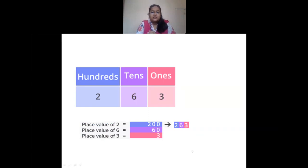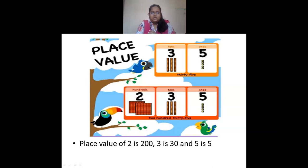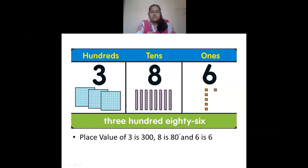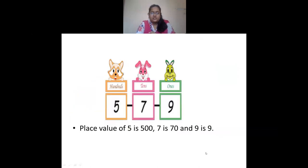In 263, the place value of 2 in hundreds place is 200, place value of 6 is 60, and 3 is 3. In 235, place value of 2 is 200, 3 is 30, and 5 is 5. Then 386: place value of 3 in hundreds place is 300, 8 in tens place is 80, and 6 in ones place is 6.